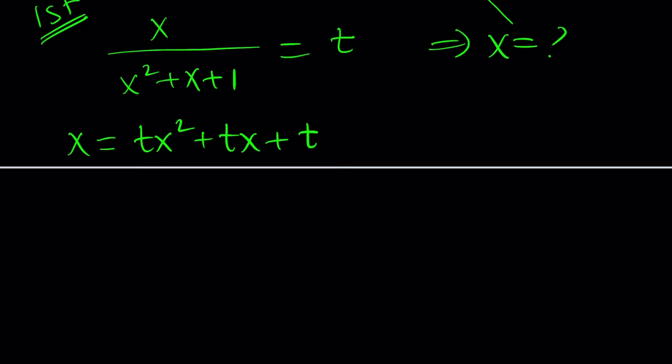x equals tx squared plus tx plus t. Let's put everything on the same side. tx squared plus tx minus x, that's going to be t minus 1 multiplied by x, and then plus t equals 0. As you can see, this is quadratic in x, not in t.